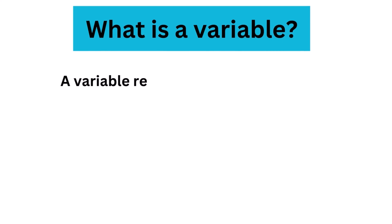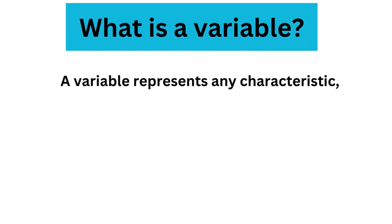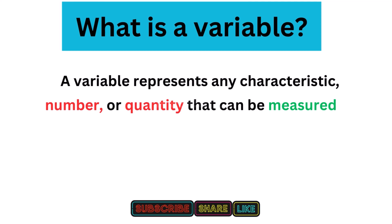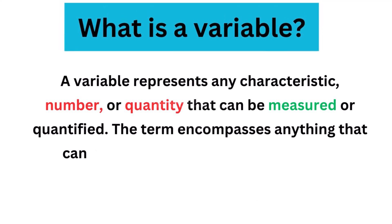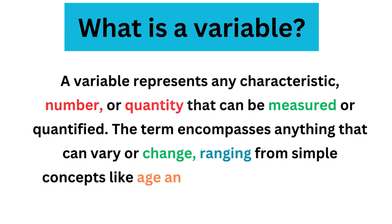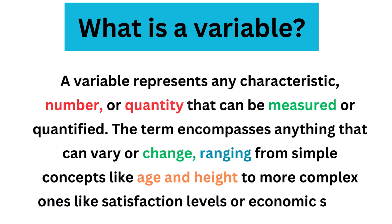So first, what is a variable? A variable represents any characteristic, number, or quantity that can be measured or quantified. The term encompasses anything that can vary or change, ranging from simple concepts like age and height to more complex ones like satisfaction levels or economic status.